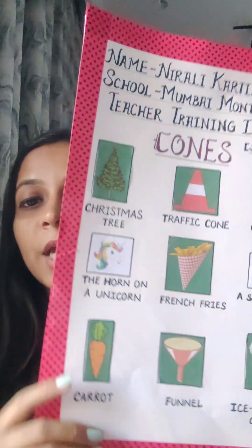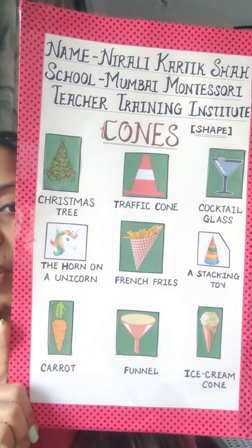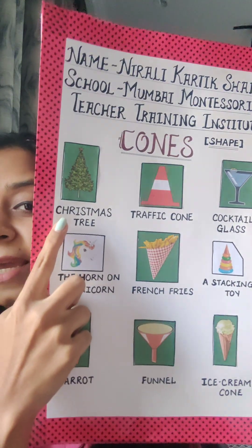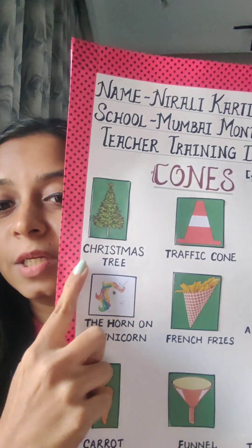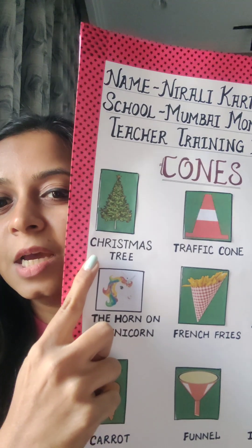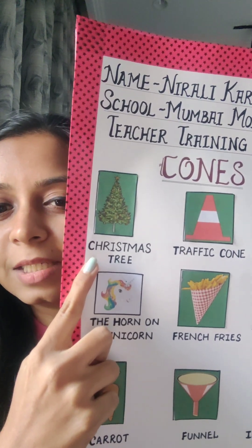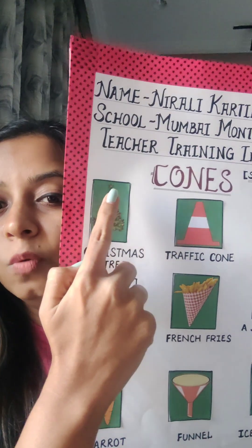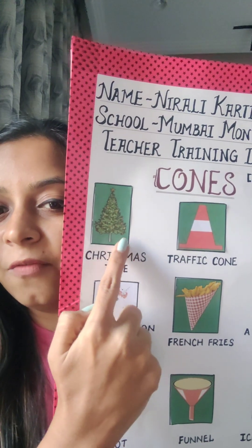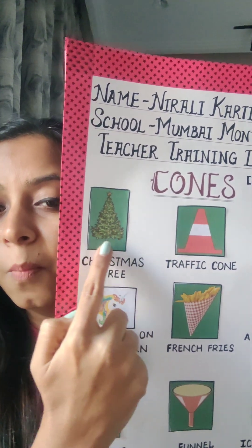Now let's learn what cones we have around us. Here we have different kinds of cones. You see this Christmas tree? This Christmas tree we see during Christmas — it has a cone shape which is pointed at the top and flat and wide at the bottom.